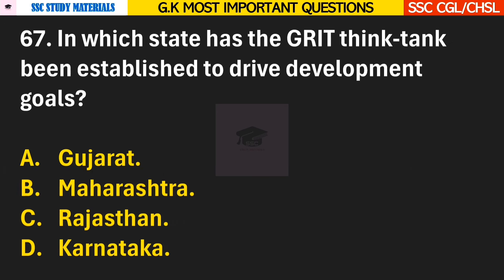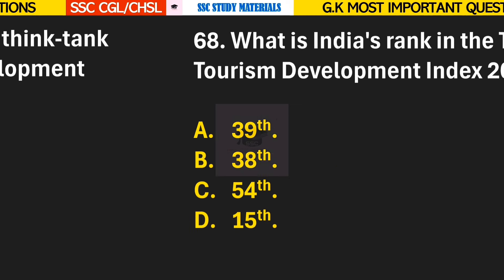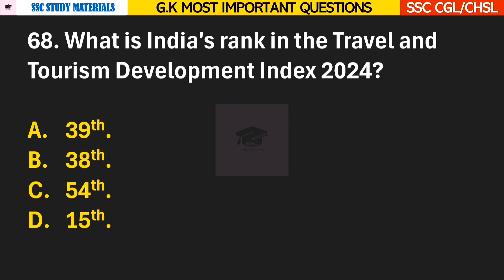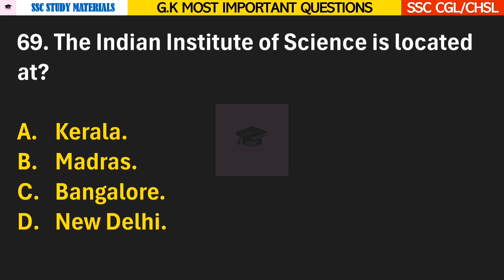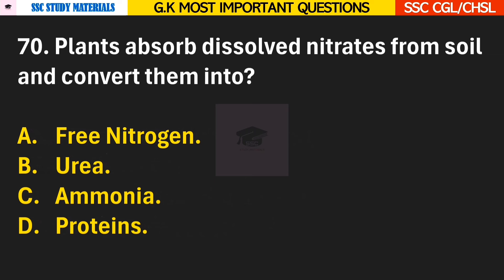Question 67: In which state has the GRIT think tank been established to drive development goals? Answer A — Gujarat. Question 68: What is India's rank in the Travel and Tourism Development Index 2024? Answer A — 39th. Question 69: The Indian Institute of Science is located at? Answer C — it is located at Bangalore. Question 70: Plants absorb dissolved nitrates from soil and convert them into? Answer C — Ammonia.